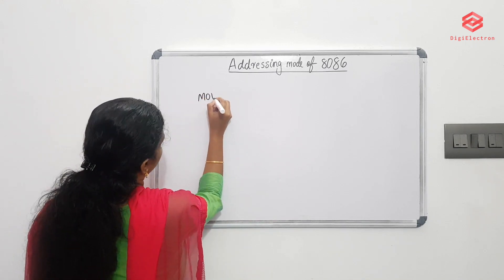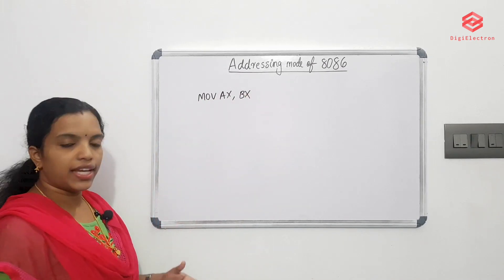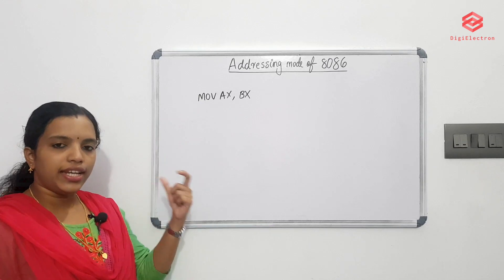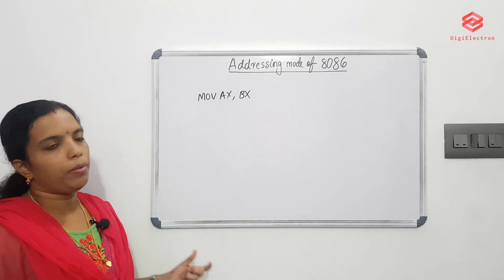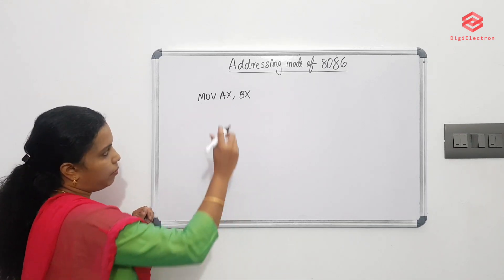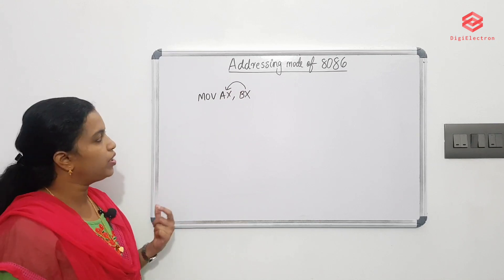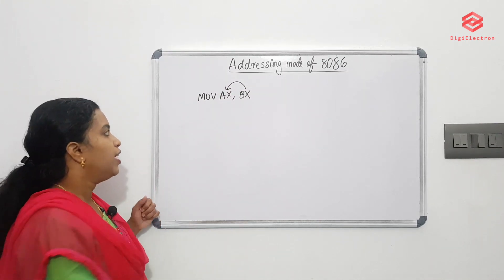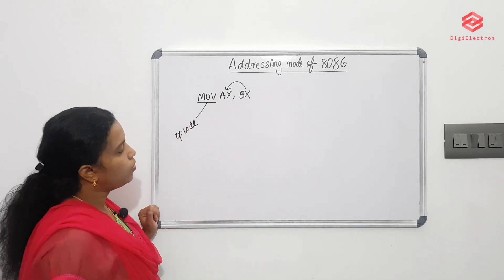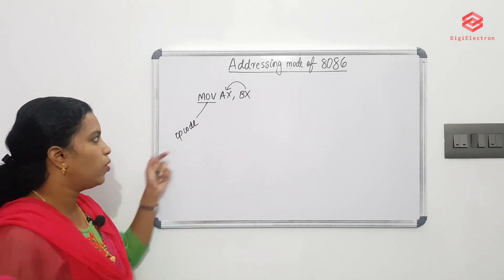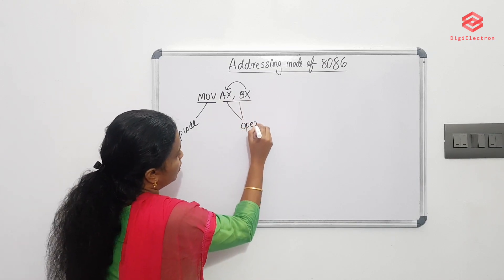We have an instruction: MOV AX, BX. In this instruction, the first part is called the opcode. The opcode defines what operation the instruction performs.